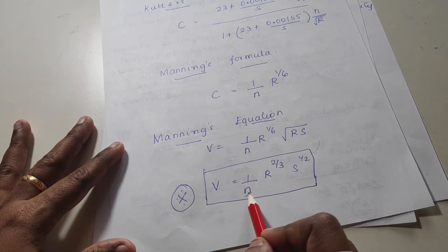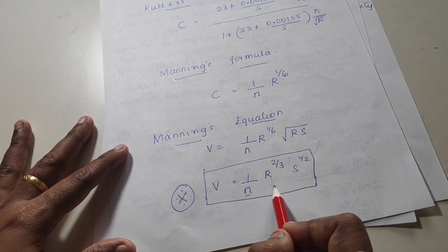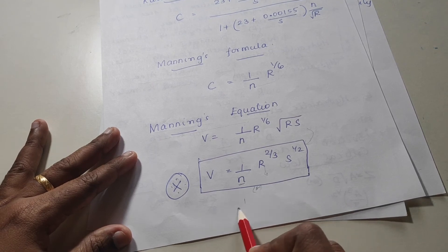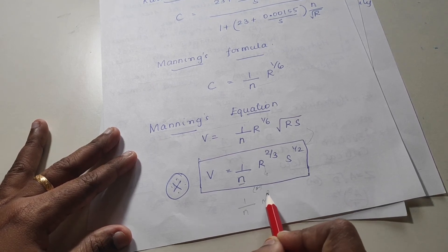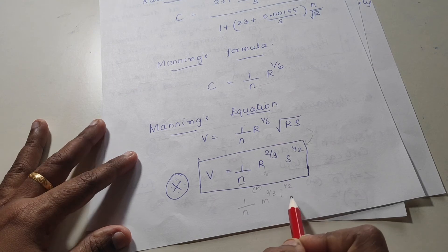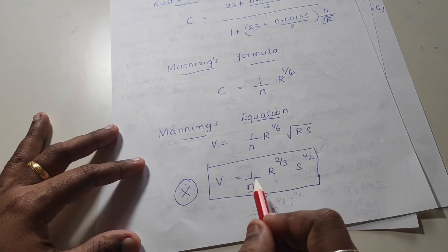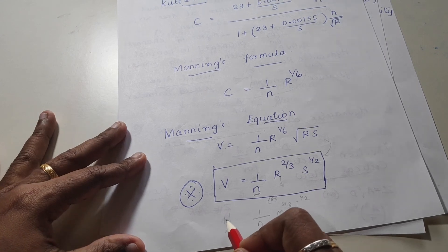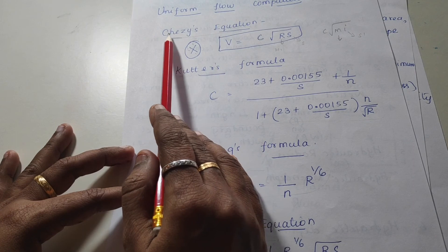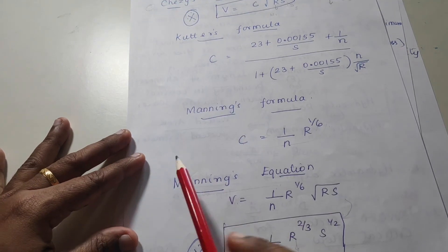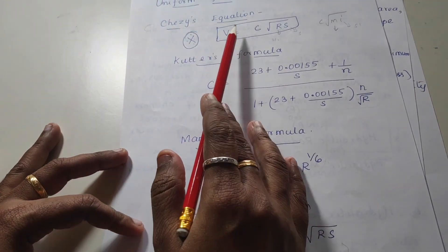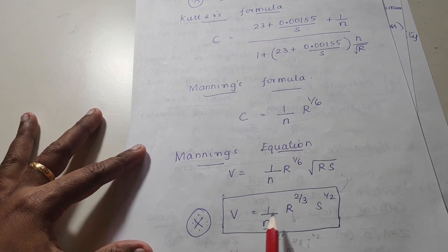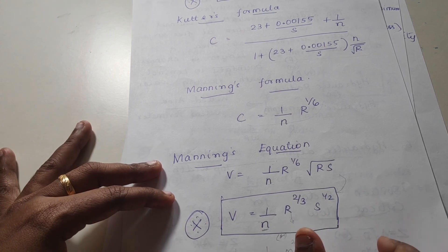Here N is Manning's constant, R is the hydraulic mean depth or hydraulic radius, and S is the bed slope. This can also be written as 1 by N into M to the power 2 by 3 into I to the power half. In some cases it may be represented with a capital N — that is also Manning's constant. So, uniform flow computation uses Chezy's equation V equals C root RS, and Manning's equation V equals 1 by N into R to the power 2 by 3 into S to the power half.